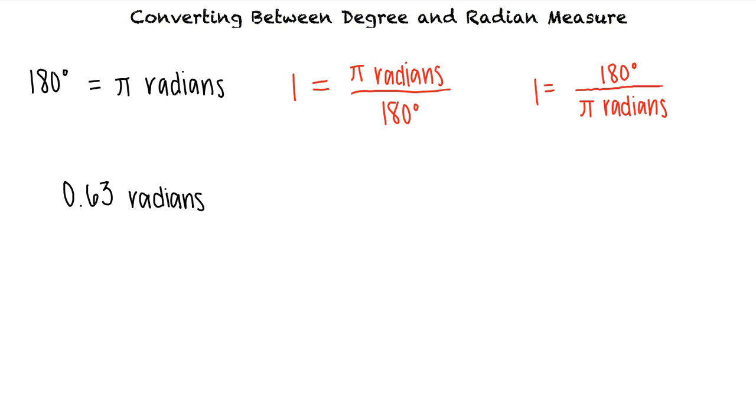So we'll multiply 0.63 radians by 180 degrees over pi radians. The radians will cancel out, and using our calculator, we see that 0.63 radians is equal to 36.1 degrees. What if we were asked to convert a measurement in degrees to a measurement in radians? Would we use the other conversion factor? That's right.